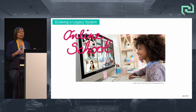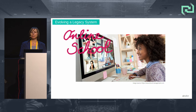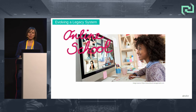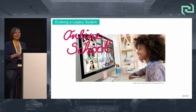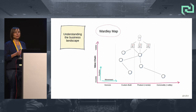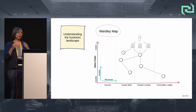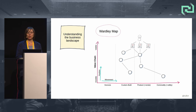Let's demonstrate this approach by evolving a legacy system using an example of an online school solution for junior students. We can start with gaining a common understanding of the business landscape by creating a Wardley map that visualizes the landscape of an organization.